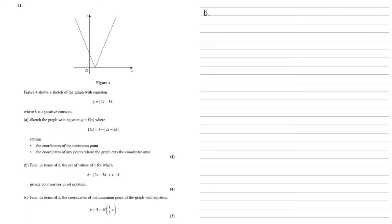For part b, we need to find in terms of k, the set of values of x for which k minus modulus 2x minus 3k is larger than x minus k. Because we're dealing with modulus here, there are going to be two ways to get this answer. Let's start with the positive bit. We're going to do k minus 2x minus 3k in brackets, and this is larger than x minus k. Expanding this out, we get k minus 2x plus 3k is larger than x minus k. Then adding 2x to both sides and adding k to both sides, we get that 5k is larger than 3x, hence x is smaller than 5k over 3.